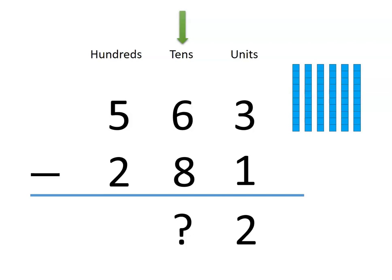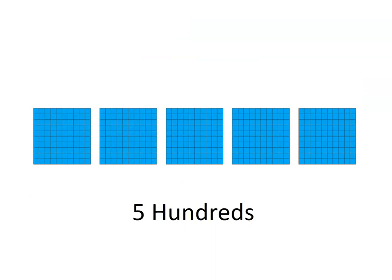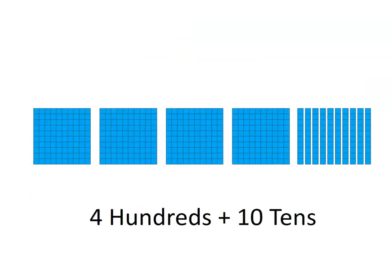Well, remember the fact that we can make equal trades. We do have 5 hundreds. And we know that 5 hundreds is the same as 4 hundreds and 10 tens.